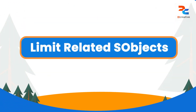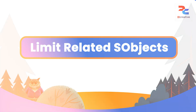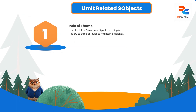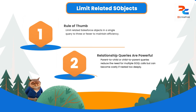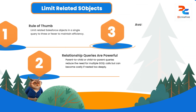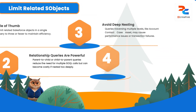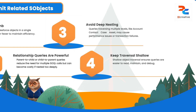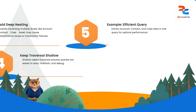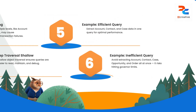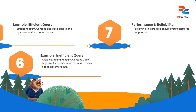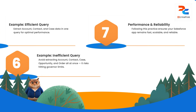The next best practice is to limit the number of Salesforce objects. To ensure your SOQL queries run efficiently and avoid hitting governor limits, a good rule of thumb is to limit the number of related Salesforce objects to three or fewer. While relationship queries are powerful, nesting too deeply can cause performance issues and transaction failures. A query fetching a contact's account and that account's cases is efficient, but traversing an extensive chain like account to contact to case to asset is a red flag. Keeping your object traversal shallow ensures queries are easier to read and less likely to exceed Salesforce's governance limits.